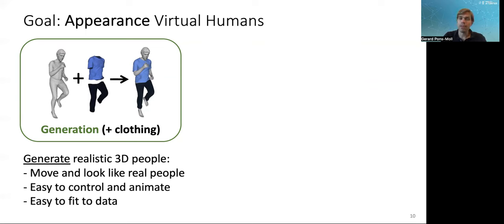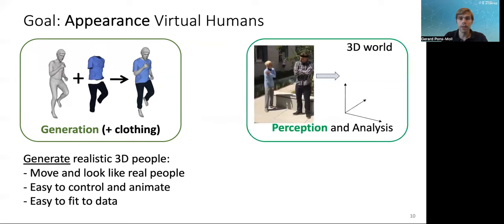The idea of these virtual humans is that you have a few parameters that produce different people, right? They are not specific to one subject, but basically they generalize across a population of people. So this is the generation. This is more of a computer graphics problem.